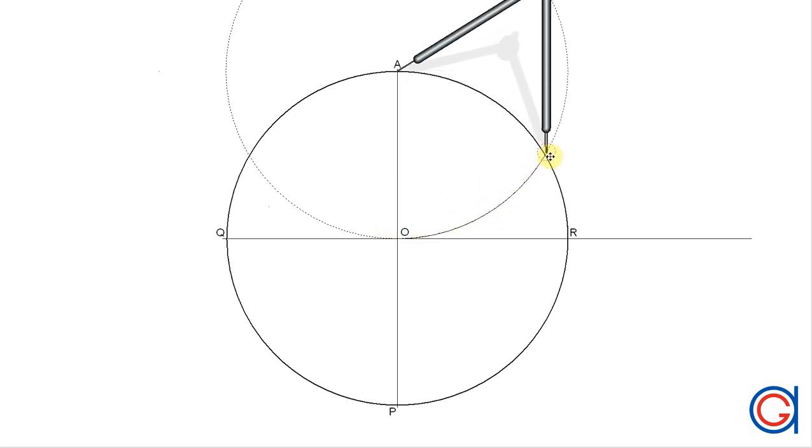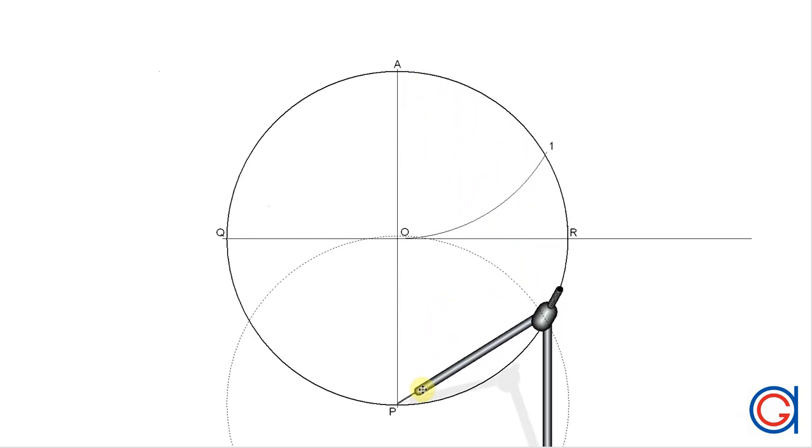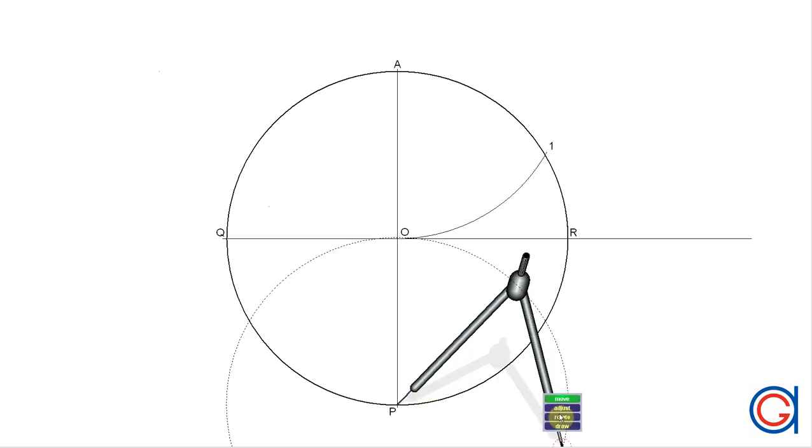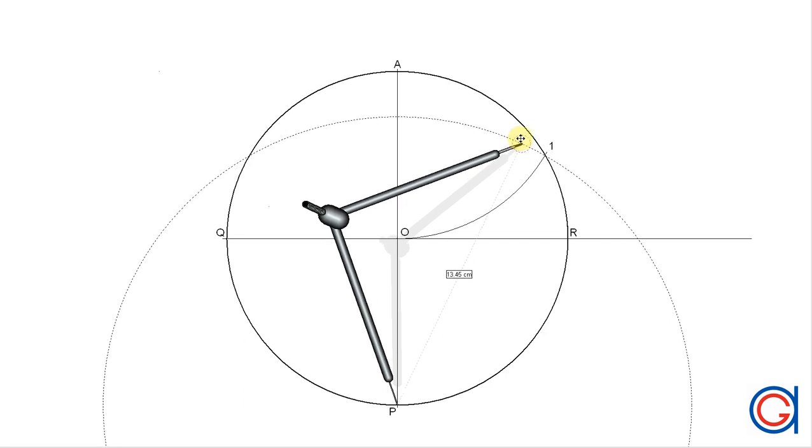So now setting our compass on point A and setting it to the length A0, we scribe an arc to the right until it cuts our circumference at point 1. So now we continue by setting our compass on point P and with the radius P1, we scribe an arc to the right until it cuts our prolongated diameter at a point we will call 2.